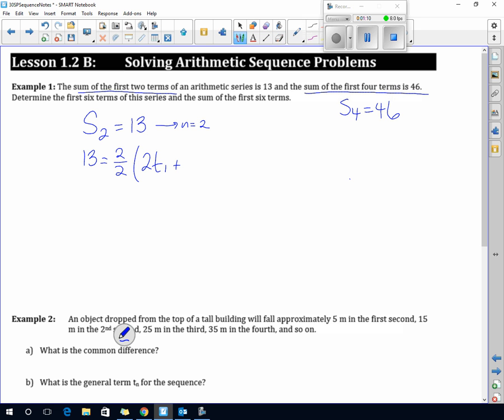I'm going to simplify this and get 13 equals 2T1 plus D. Over here, 46 equals 4, because N is 4, 4 divided by 2, twice the first term, plus N minus 1 would be 4 minus 1, so that's 3D. Simplifying, I get 46 equals, well 4 divided by 2 is 2, and I'm going to multiply this into both, so I get 4T1 plus 6D.